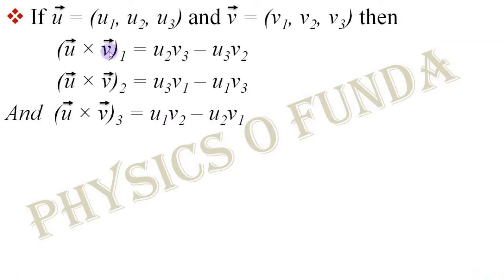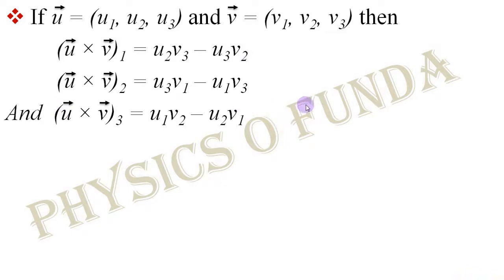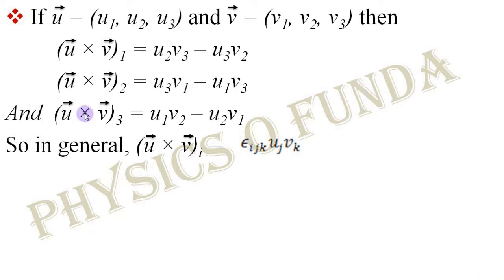Let us consider two vectors u and v with components u₁, u₂, u₃ and v₁, v₂, v₃ respectively. If we take the cross product of these two vectors, we get the components of that cross product. We all know these. If we look at these components carefully, we can write them in general using the Levi-Civita symbol.